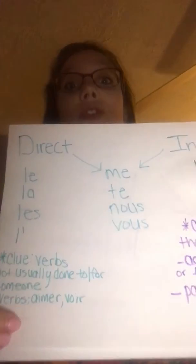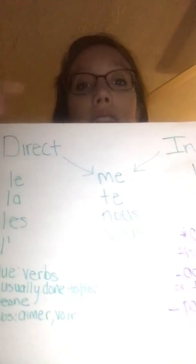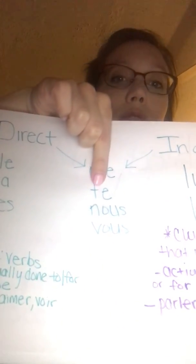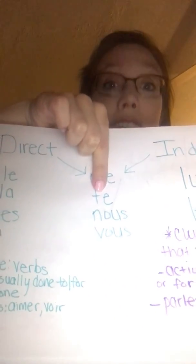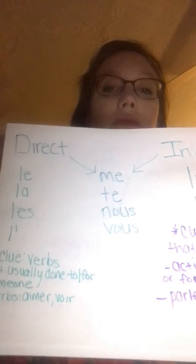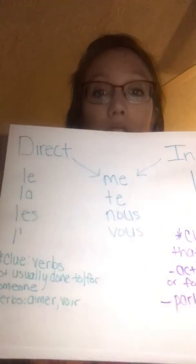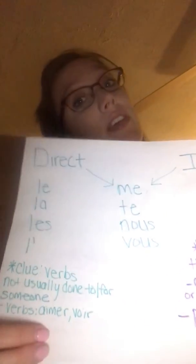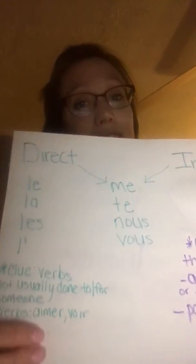This is where je t'aime comes in — I love you. Use te for 'you': je t'aime, which means I love you. It's not that you're technically doing anything to or for them — I know that you love them — but you're not technically doing anything to or for them.